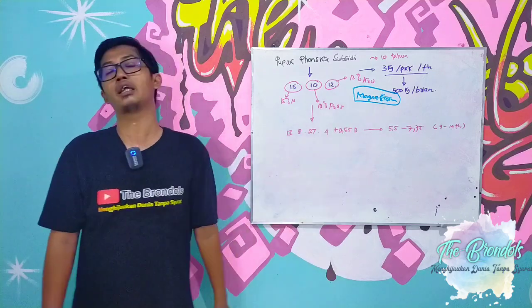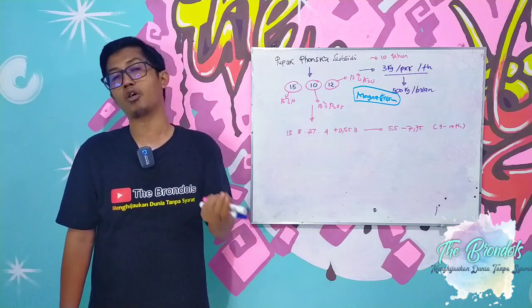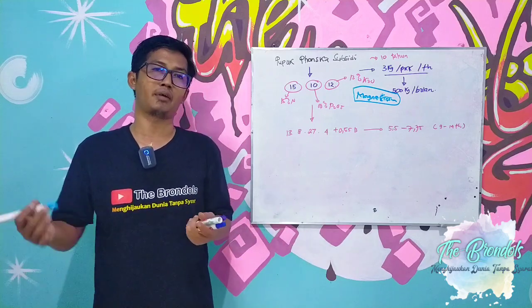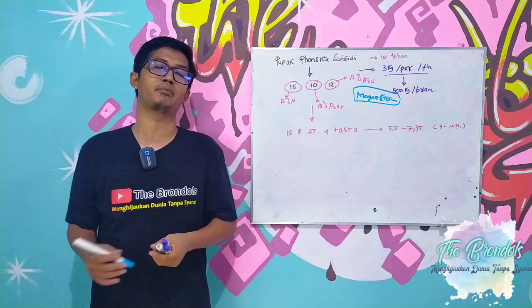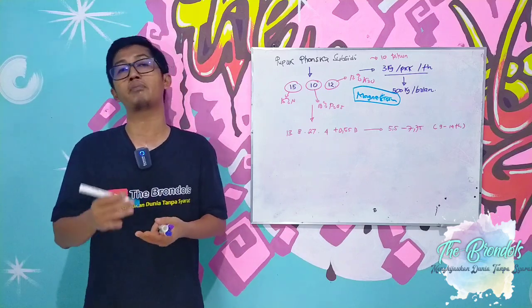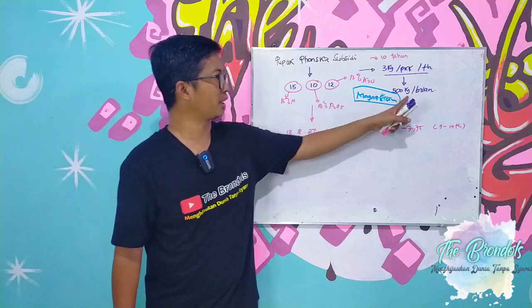Because magnesium is a component of chlorophyll. When the chlorophyll itself is deficient in magnesium, then photosynthesis will definitely not be optimal in the process. When photosynthesis is not optimal, then nutrient and water absorption will also not be optimal, resulting in production of only 500 kg per month.